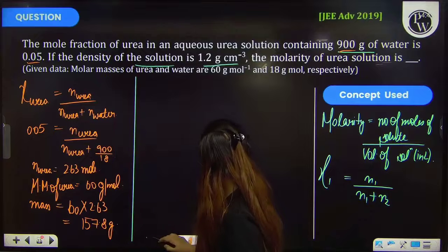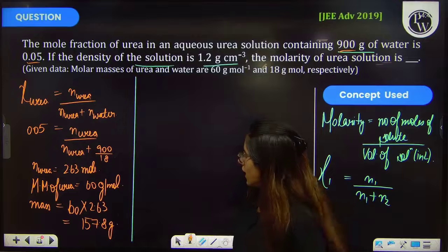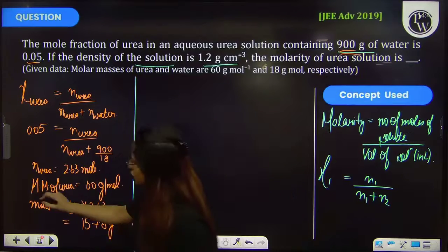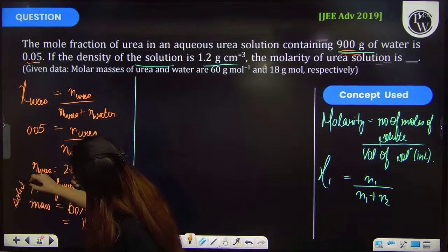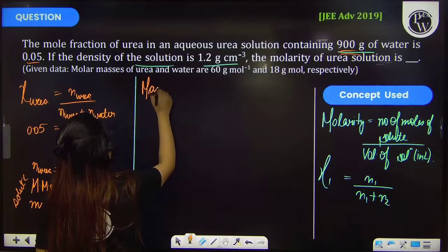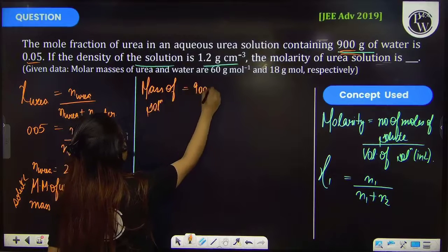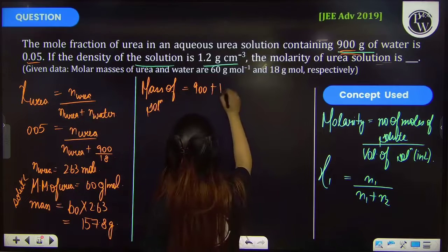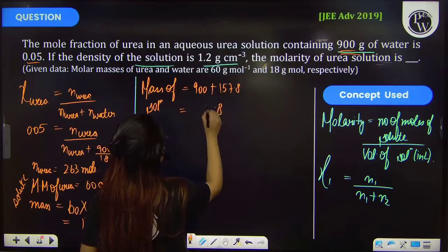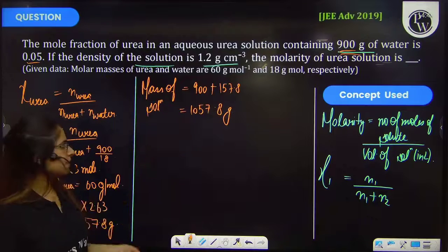We know that mass of solution is equal to mass of solute plus mass of solvent. Mass of solvent is 900 grams — water is your solvent — and urea is your solute with mass 157.8 grams. So mass of solution is 900 plus 157.8, which gives 1057.8 grams.